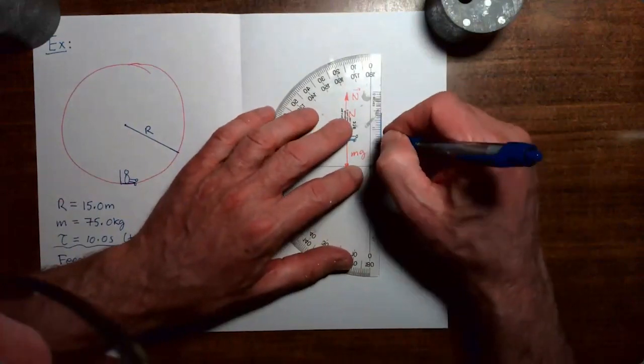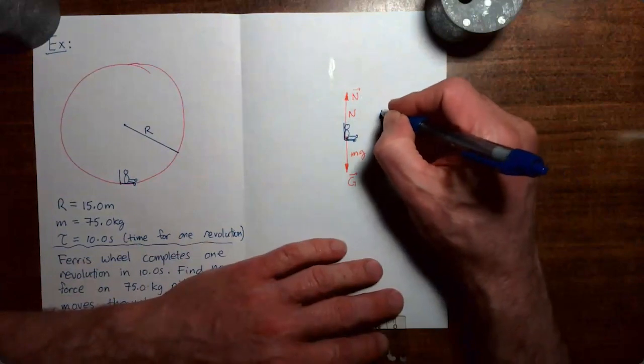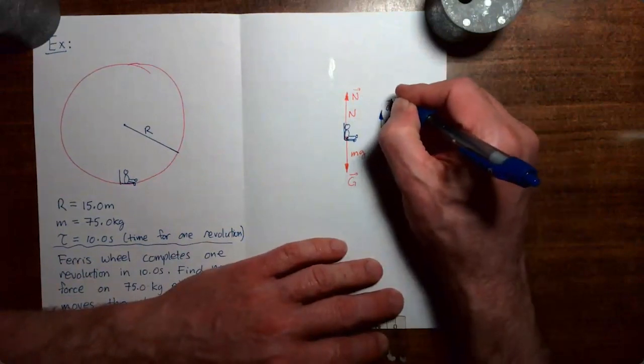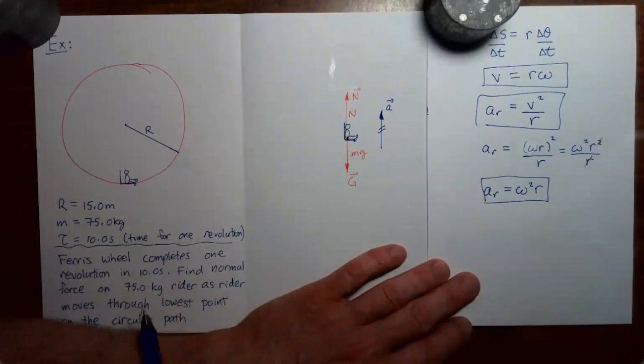So I'm going to come over here and off to the side, put in the acceleration vector. We saw in an earlier video that the acceleration of an object moving in a circle at constant speed can be computed two different ways.